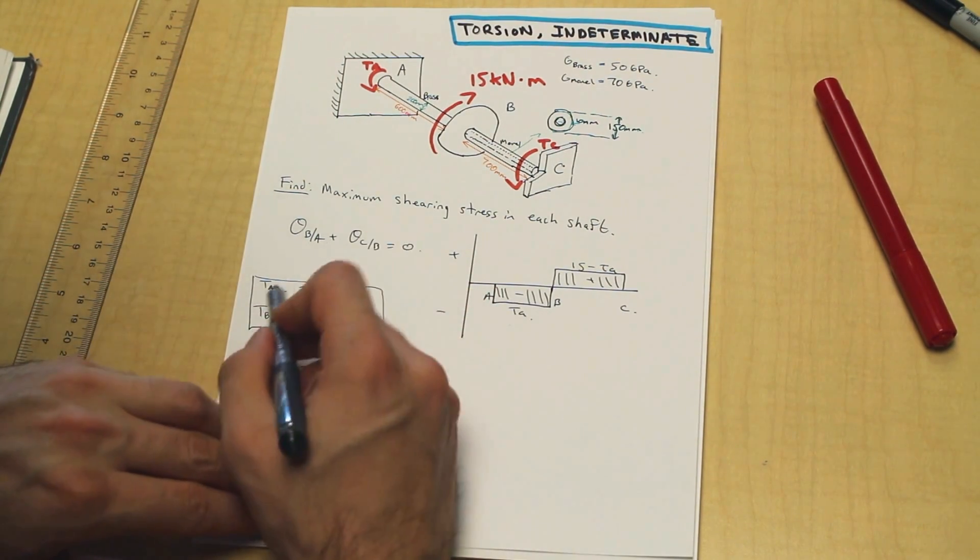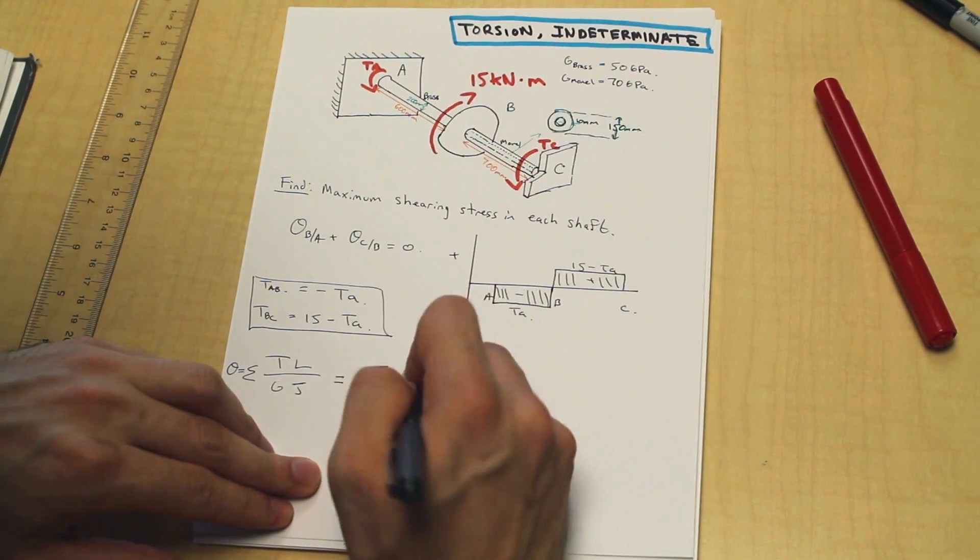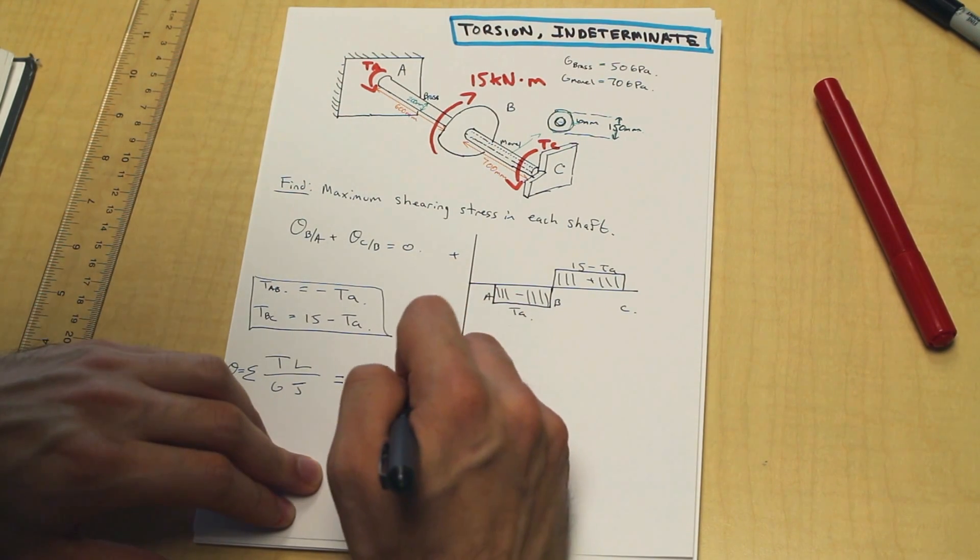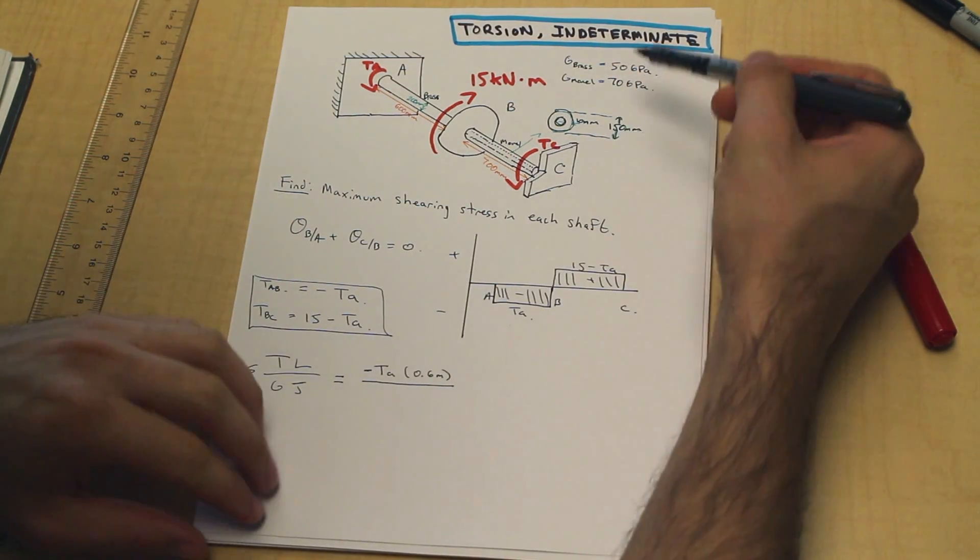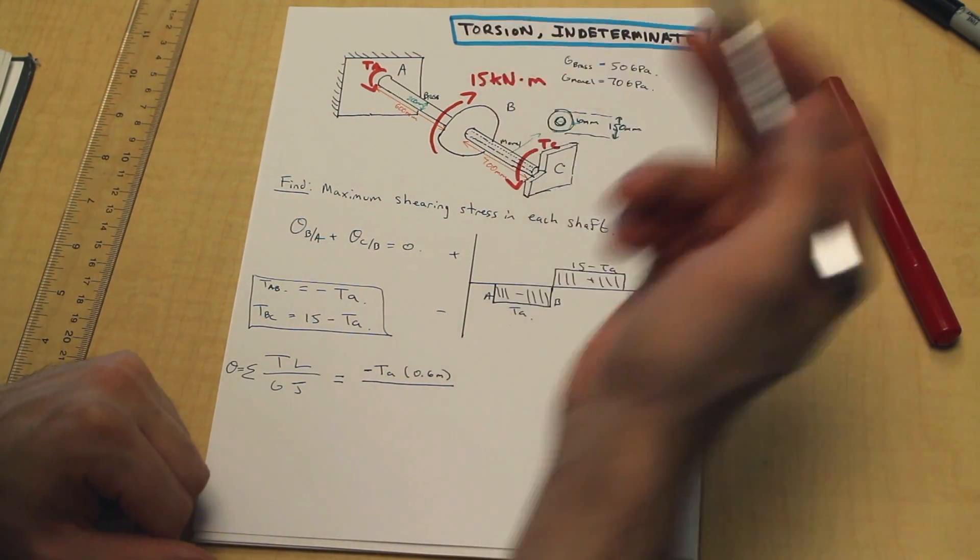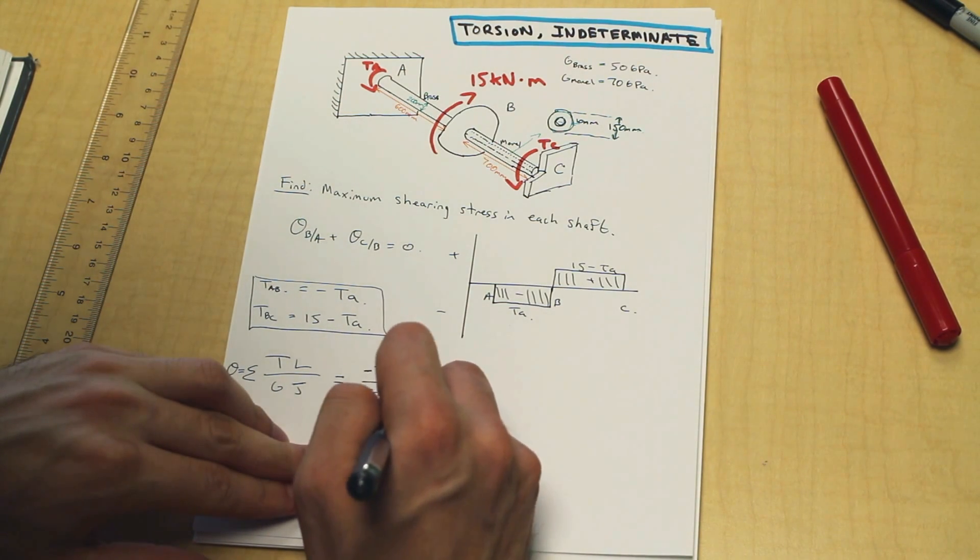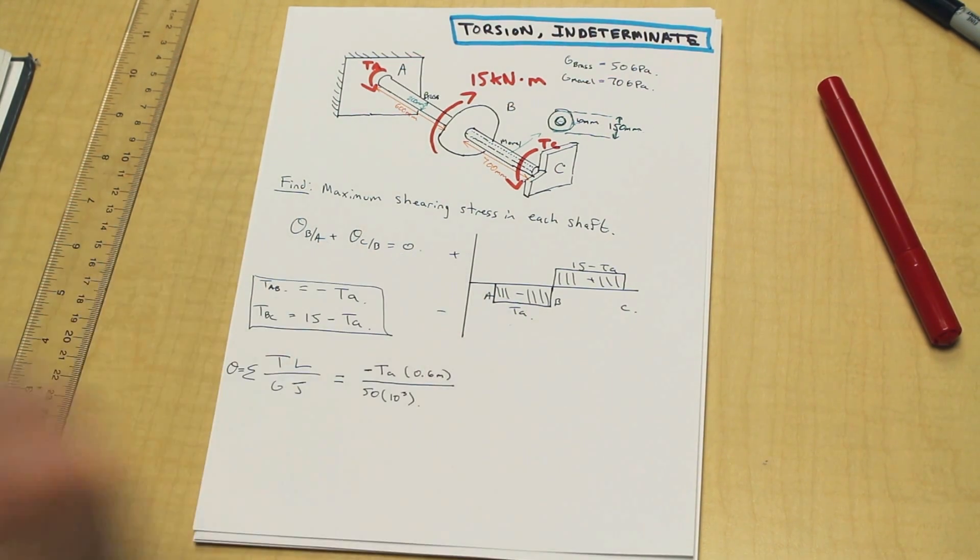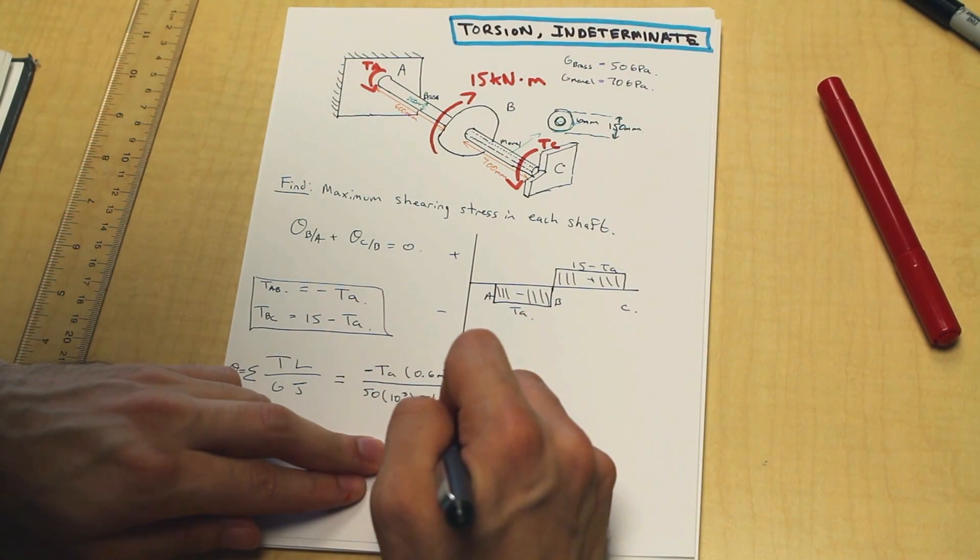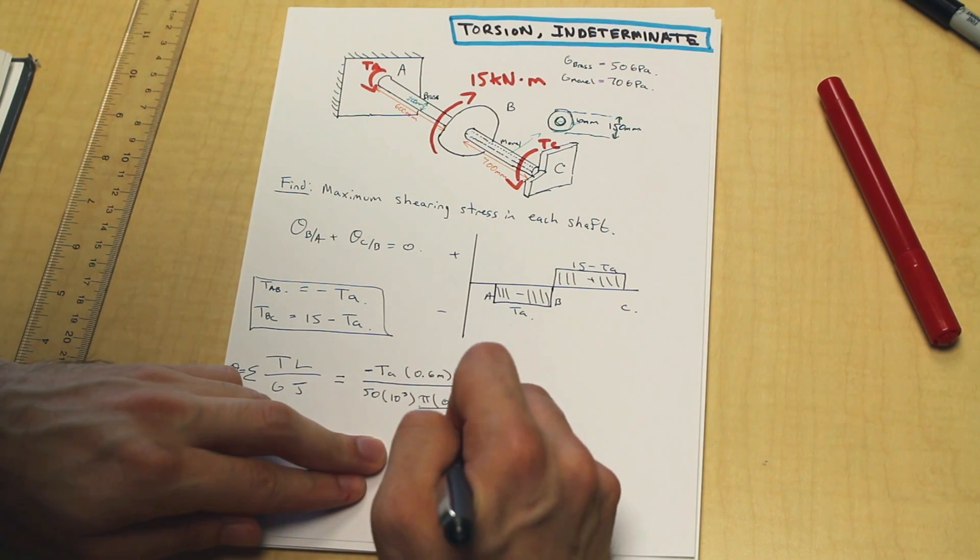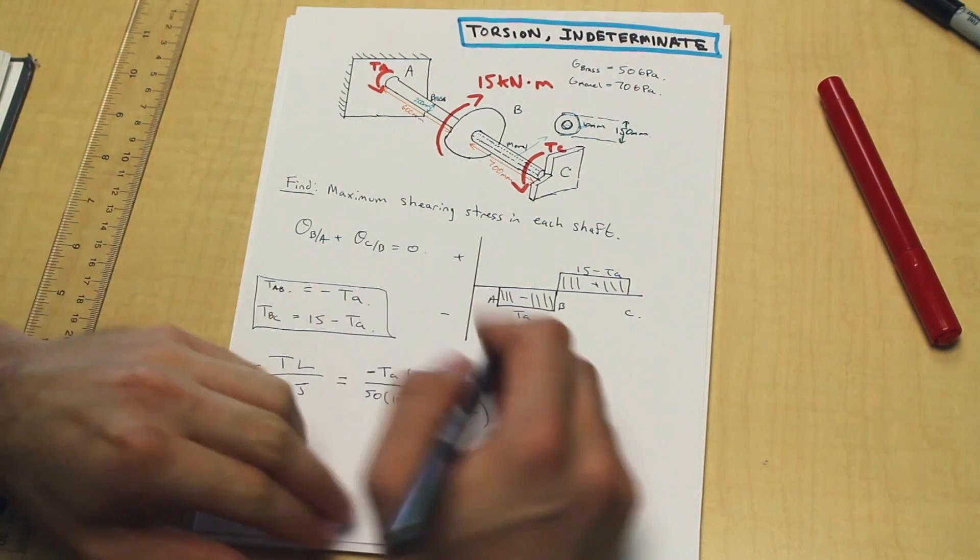And you know what, this time however, we are going to sub in the torques in terms of TA and we're going to solve for TA. That's just all we're going to be doing. So we have for section TAB, we have negative TA, right? Just coming right from here. The length of the shaft is 600 millimeters. We'll put that into meters for now. And what's G? That's a good question.